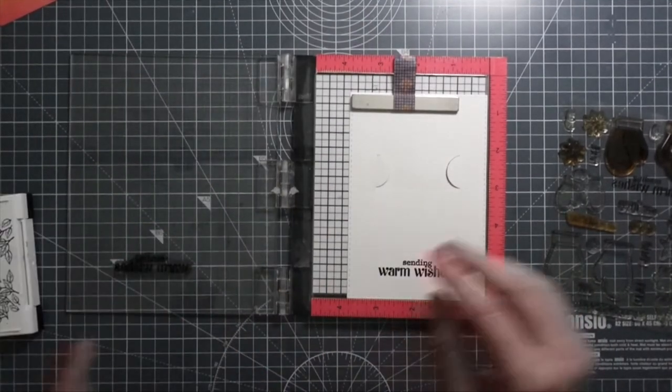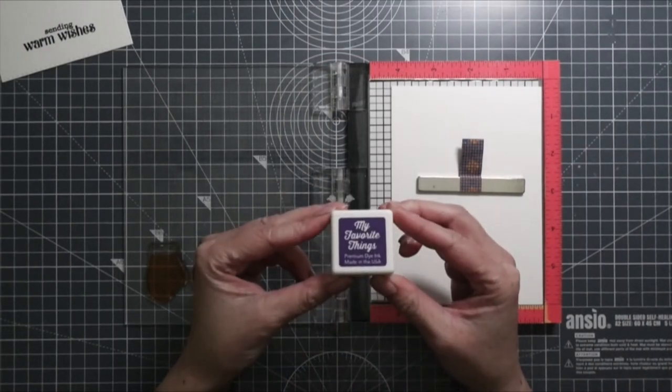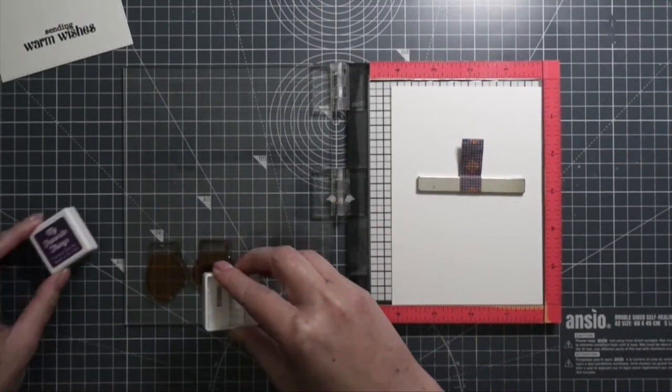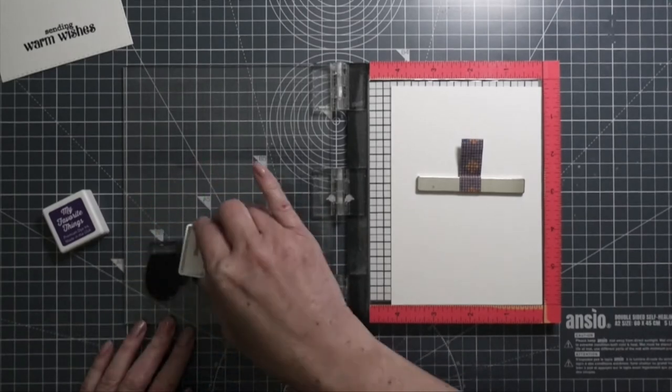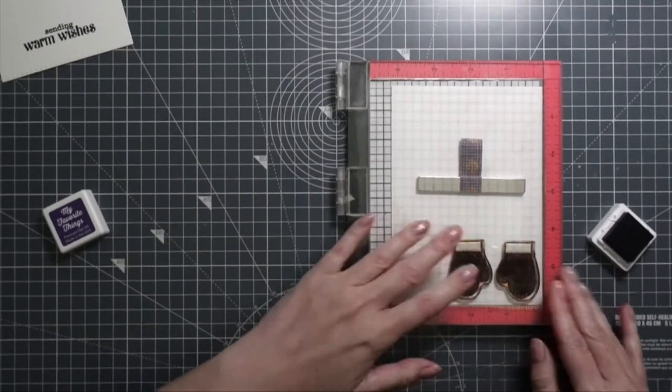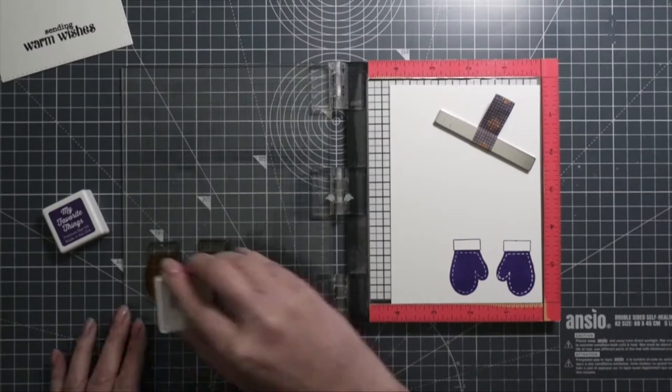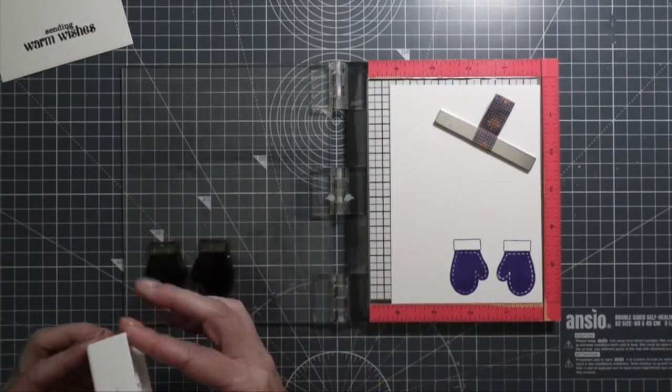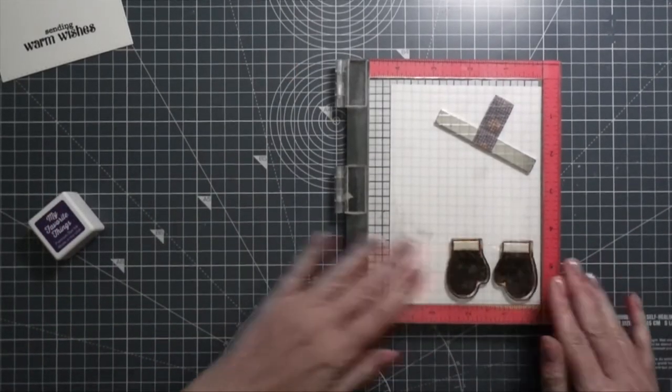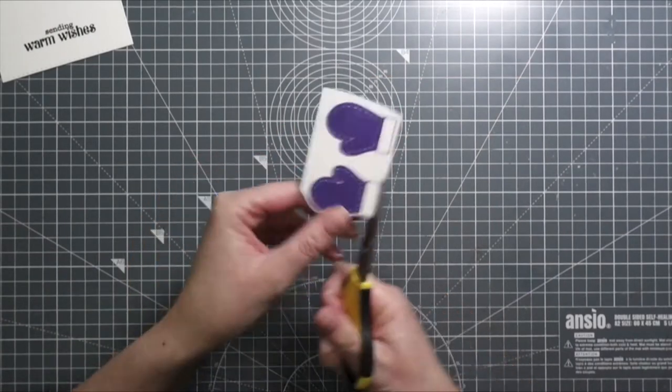Then I stamped the mittens using purple ink from MFT. My trial card had red mittens, but I didn't have any Christmas gift cards—I didn't want to buy new ones. I had a purple gift card from H&M, so that's why I used purple on the mittens.